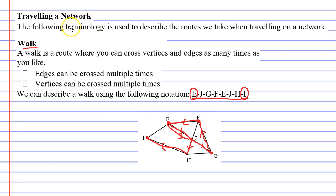When we went on our walk we noticed a couple of things. First of all we crossed one edge twice — we crossed the edge from E to J twice, and when you go on a walk you can cross edges as much as you want. We'll tick this box: edges can be crossed multiple times. The next thing with vertices — we pass through some vertices more than once. Vertex E we started at and went through a second time, and vertex J we passed through twice as well. So we'll tick: vertices can also be crossed multiple times.